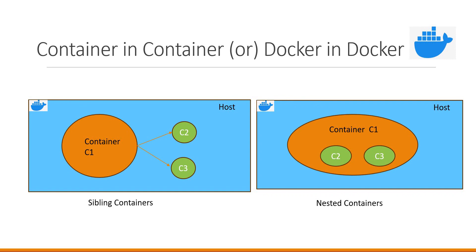Let us take an example with Jenkins. If Jenkins master or Jenkins agent is running within a container, and if we need to perform Docker builds as part of our Jenkins jobs, then those Docker builds will be executed within the container. These builds will create some other containers. So we need to configure Jenkins in such a way that we allow containers to run inside another container. The same is the case with other CI tools which can run inside Docker containers.